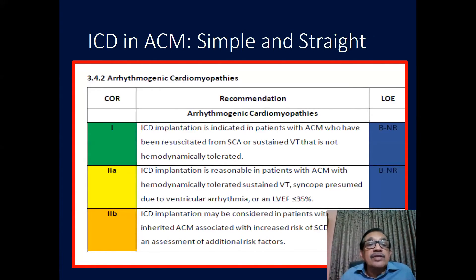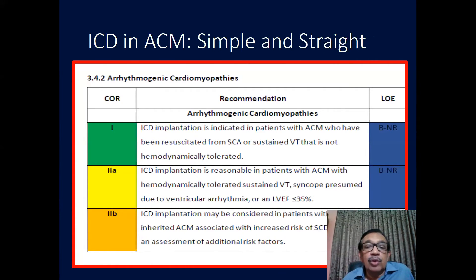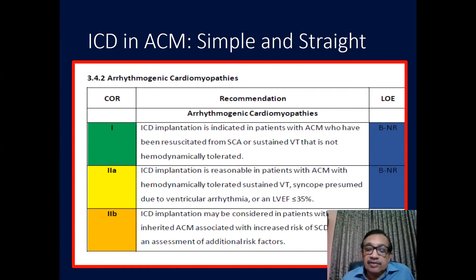The indications for ICD in arrhythmogenic cardiomyopathy are straightforward in these guidelines. It is a Class 1 indication for ICD implantation in patients with arrhythmogenic cardiomyopathy who have been resuscitated from sudden cardiac arrest or have hemodynamically unstable VT. It is a Class 2 indication if the VT is sustained and hemodynamically stable, or with an ejection fraction of less than 35%.